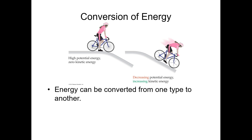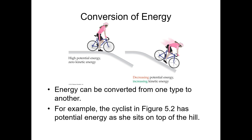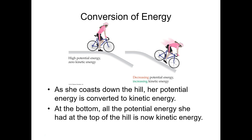Energy can be converted from one form to another. The cyclist at the top of the hill has no kinetic energy and all potential energy. As she moves downhill, her potential energy is converted into kinetic energy until she reaches the bottom, where she has all kinetic energy and no potential energy. The first law of thermodynamics tells us that energy cannot be created or destroyed, but it can be converted from one type to another.